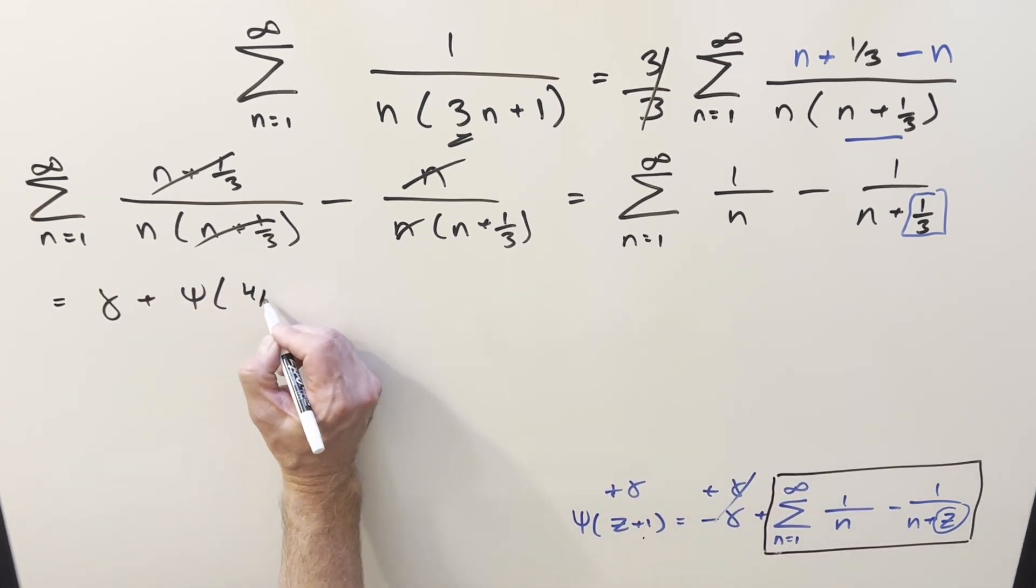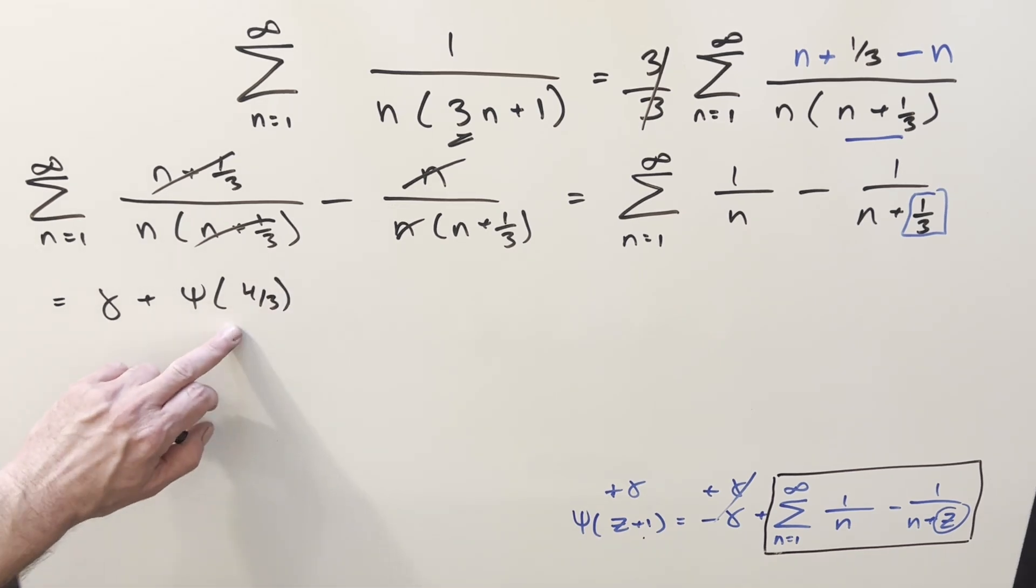Then using this, what we're going to have is going to be Euler-Mascheroni constant plus digamma of 1 third plus 1. So this is going to be 4 thirds over here.